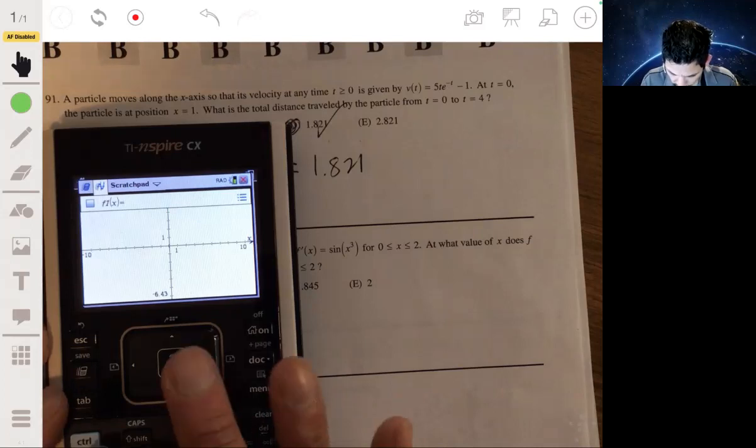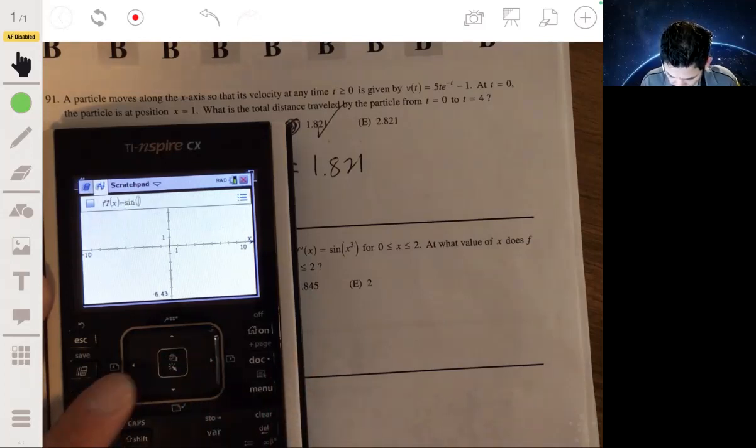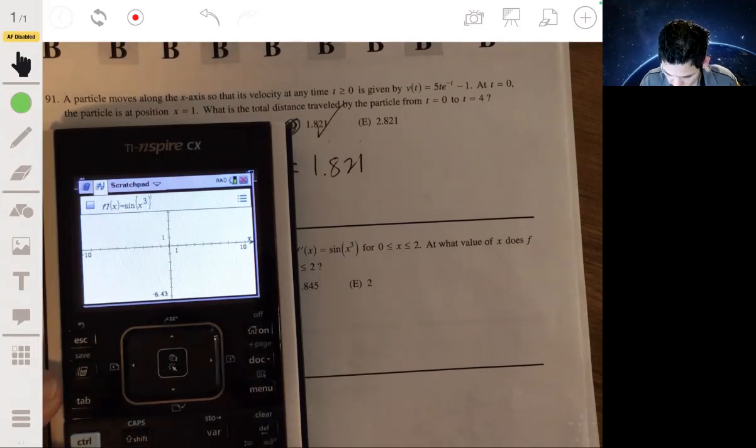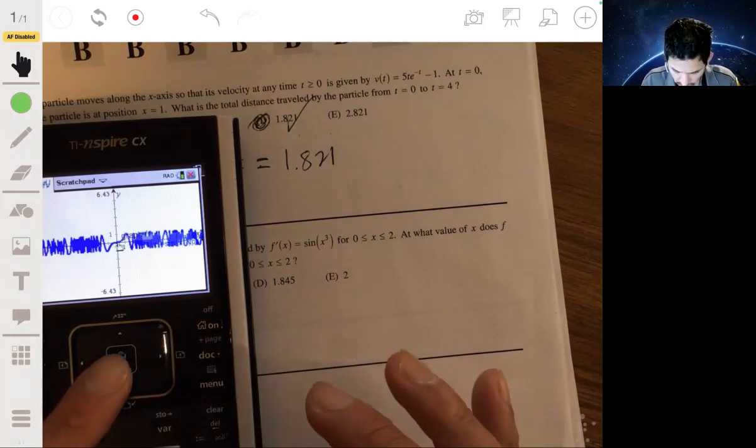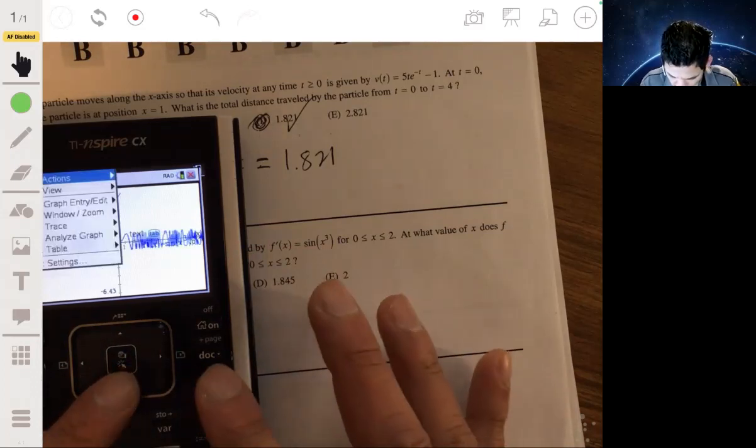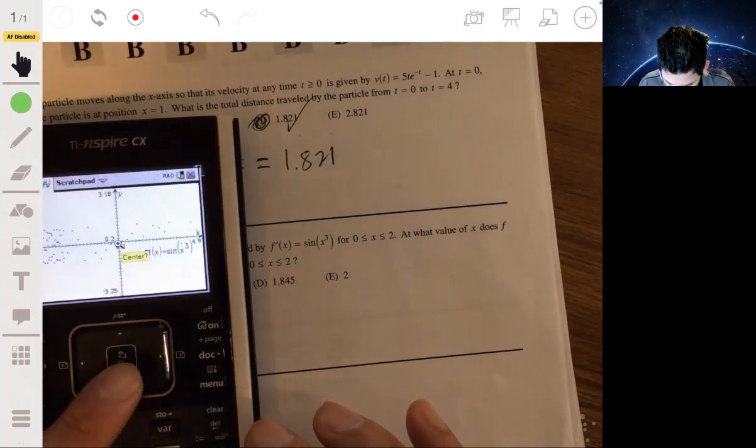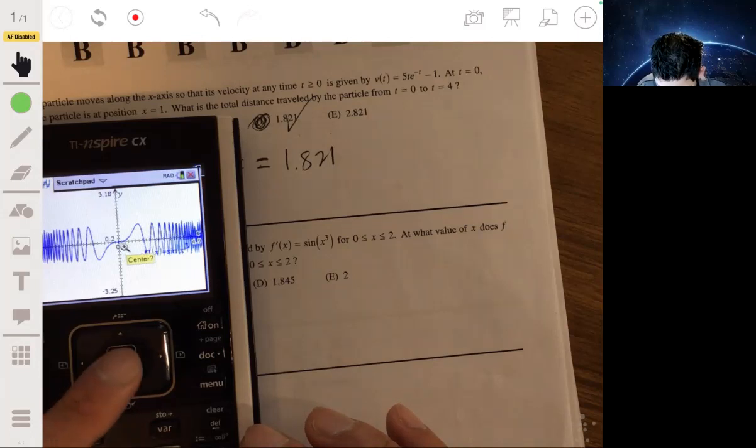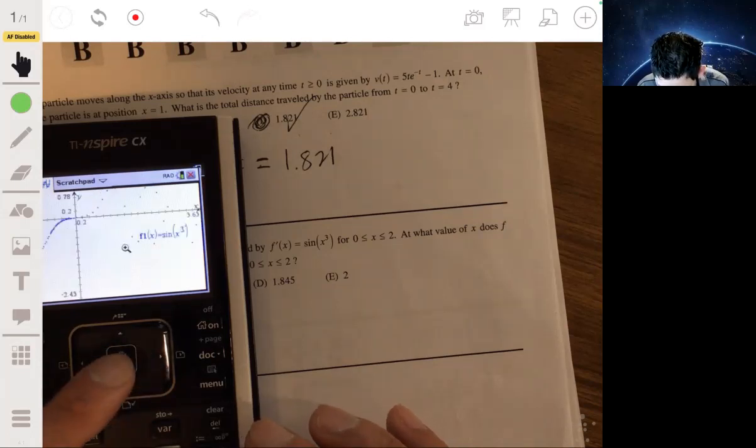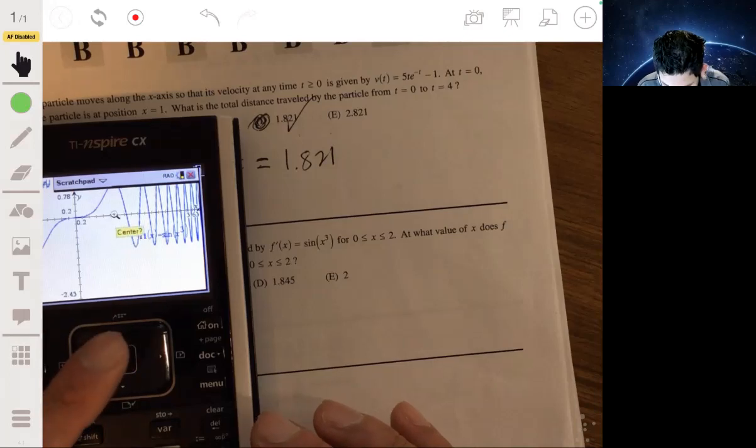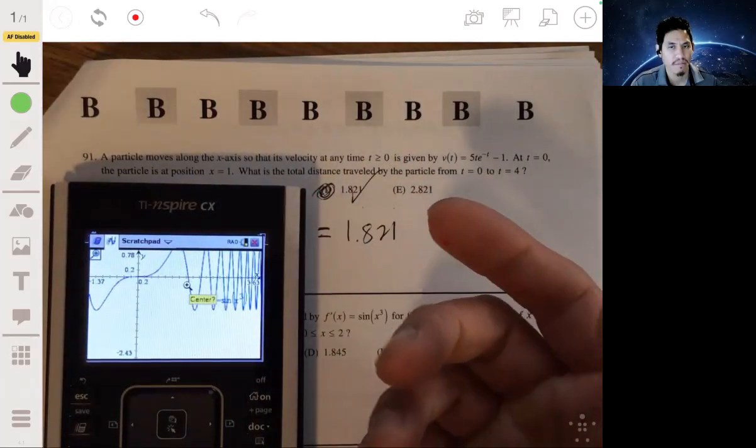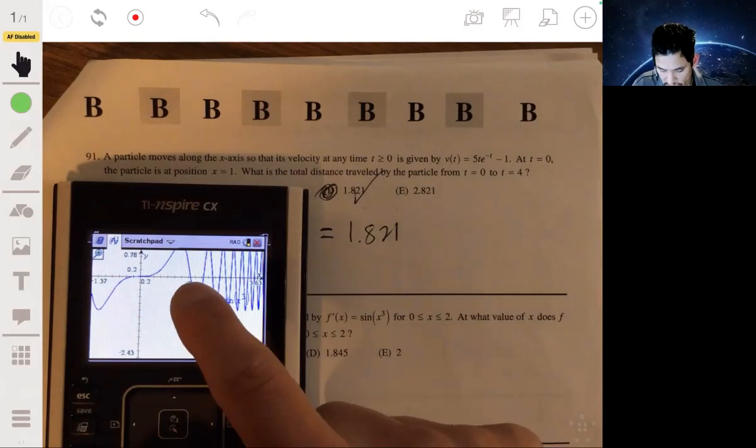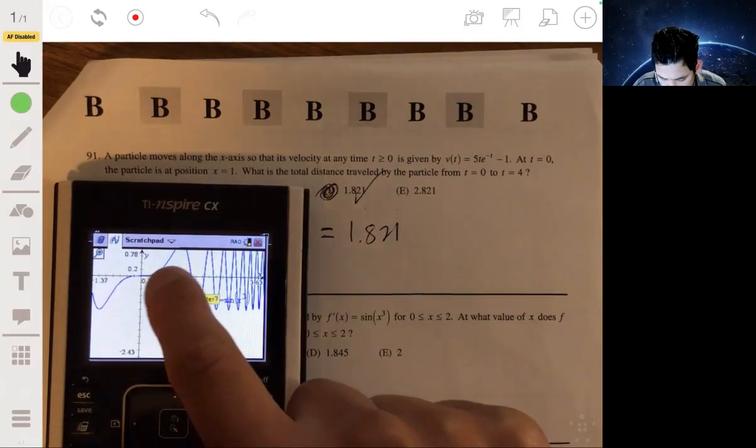We want to graph the sine of x cubed. Whoa, that's quite a graph there. Let's zoom in on this here. Zoom in. Okay, now we're getting somewhere. A little bit more. Okay, so 0 to 2. And again, they usually won't make it about not being able to see what those numbers are. So you can see the graph is positive.